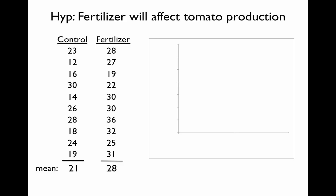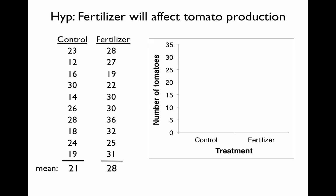Just as with any other graph, our independent variable, or our treatments, go on the x-axis. So in this case, our fertilizer and control would be on the x-axis. And our dependent variable — the one we measured, or the number of tomatoes — goes on the y-axis.